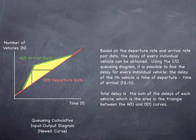Based on the departure rate and the arrival rate pair data, the delay of every individual vehicle can be obtained. Using the I-O queuing diagram, it is possible to find the delay for every individual vehicle. The delay of the Ith vehicle is the time of departure minus the time of arrival, T sub 2 minus T sub 1.